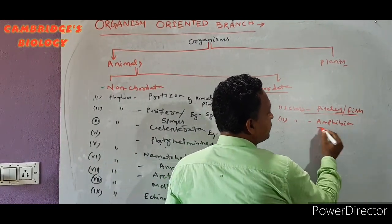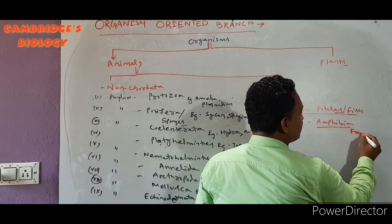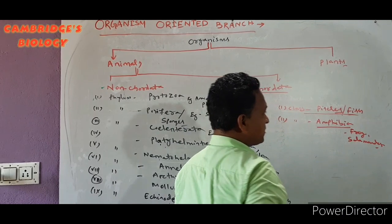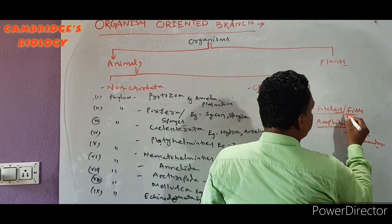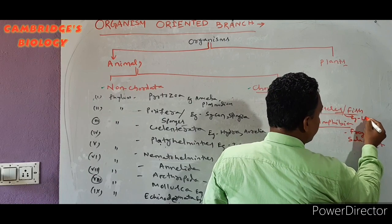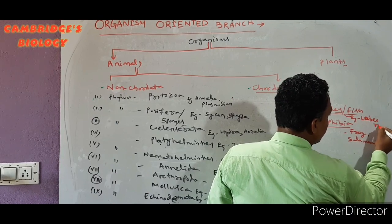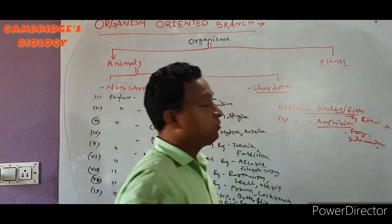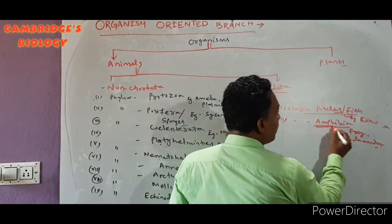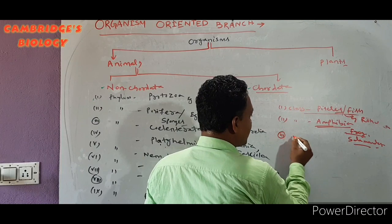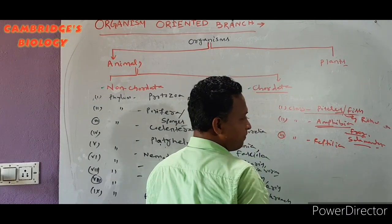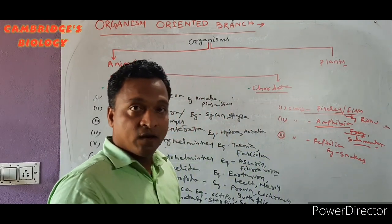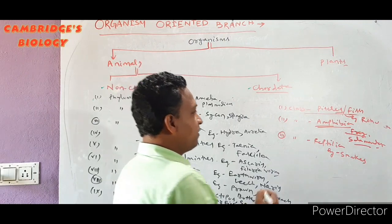Class Amphibia — examples: Frog and Salamander. Class Pisces — example: Labeo rohita, or Rohu. Class Reptilia — examples: snakes and turtles.